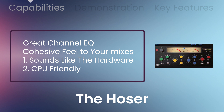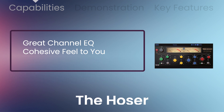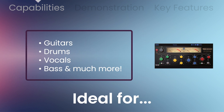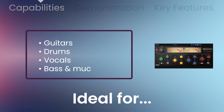The Hoser makes a great channel EQ to give that cohesive feel to your mixes. The Hoser is ideal for guitars, drums, vocals, bass, and much more.